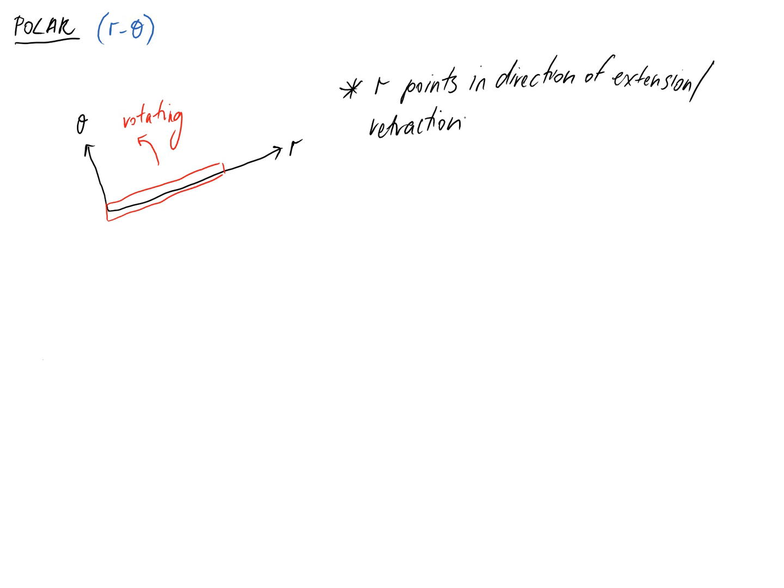r points in the direction of extension or retraction if it's applicable. And theta measures the rotation.